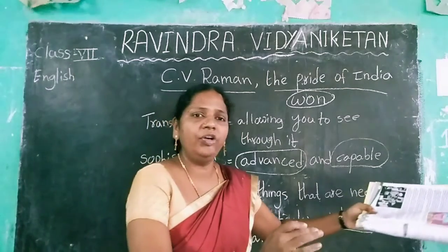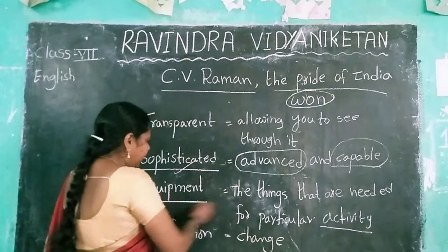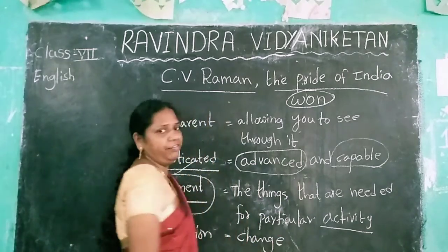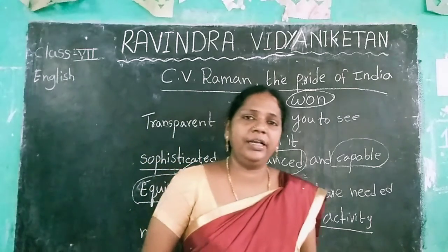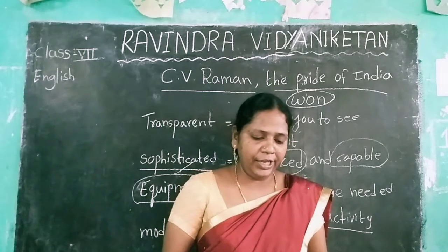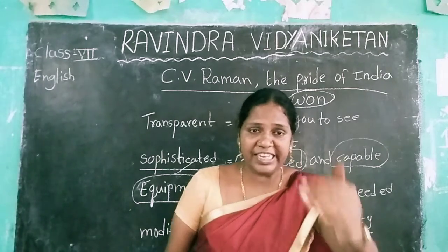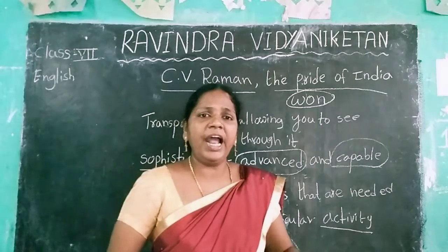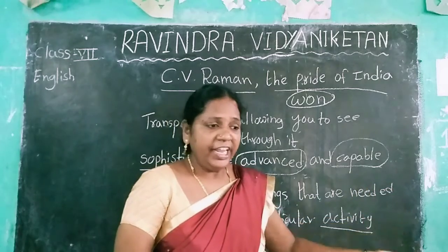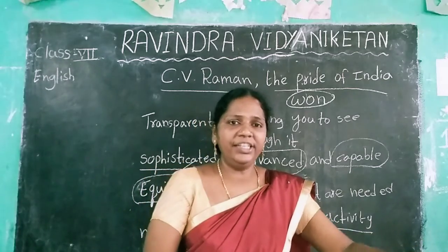Equipment refers to the things required for a particular activity. Modification means change — underline that word. So Raman had no sophisticated equipment to do this experiment, that is why he changed whatever he had and made some modification in his existing equipment.